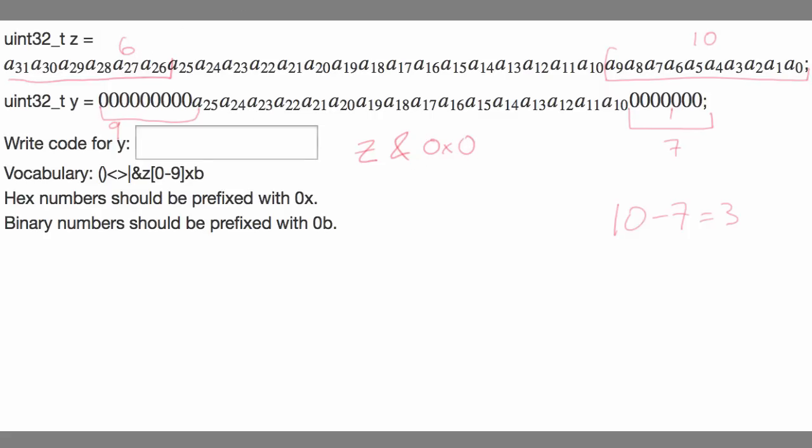Then I need a hexadecimal character for these 4 bits. I want to get rid of these ones, so I want those to be zeros, and I want these ones to be ones. So I need a 3 for that position. Then I need a series of F's, because I want to preserve all of these bits, so I want all of these bits to be 1 in my mask.